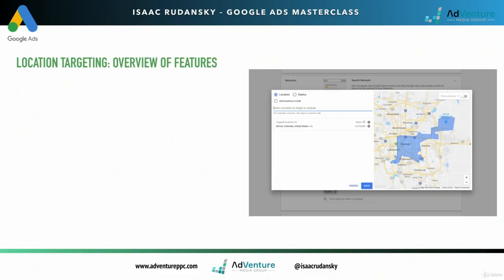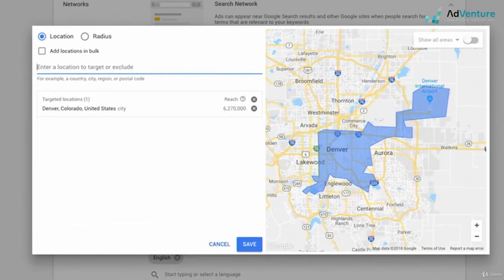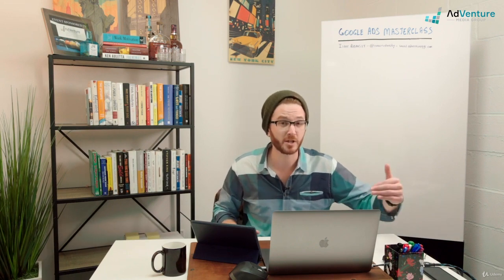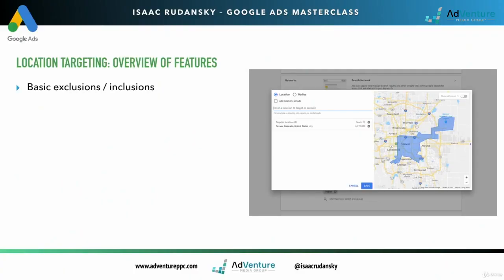Let's just do a quick overview of the features of location targeting. You could do basic exclusions and inclusions. So using Google's location targeting, I could specifically target certain locations, or I could target all locations, and I could specifically exclude specific locations. Those are your basic exclusions and inclusions.